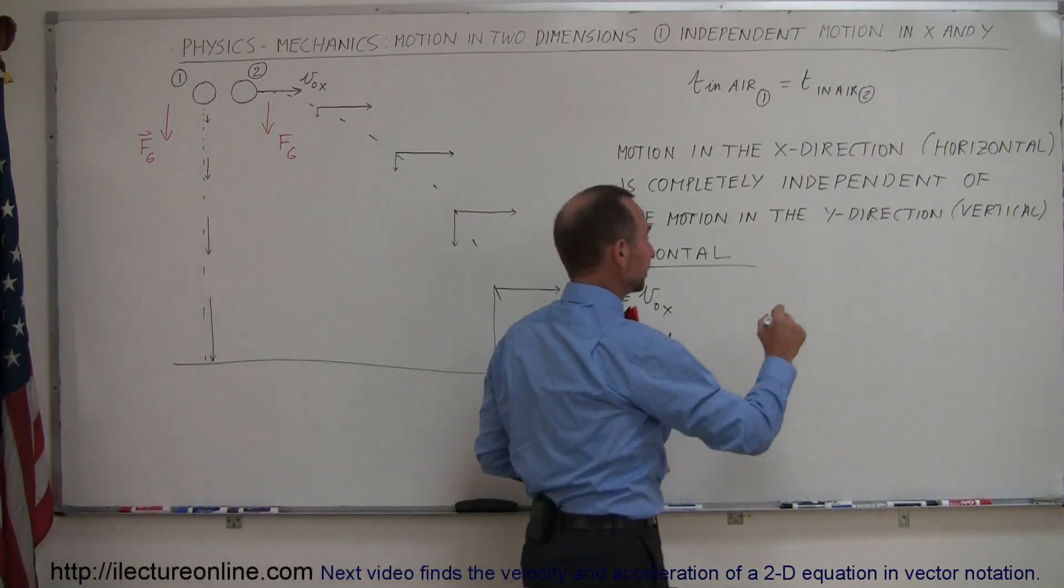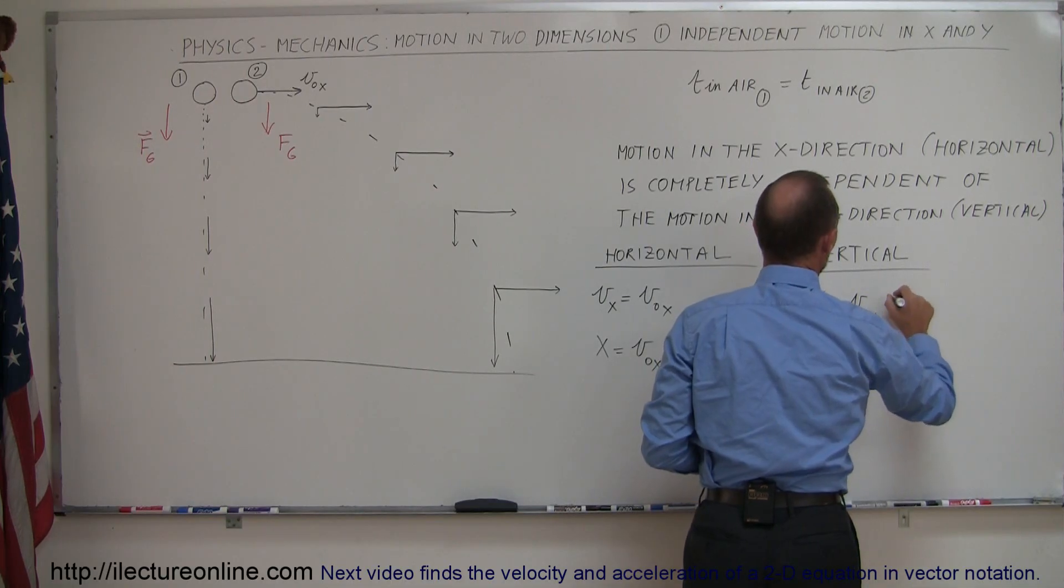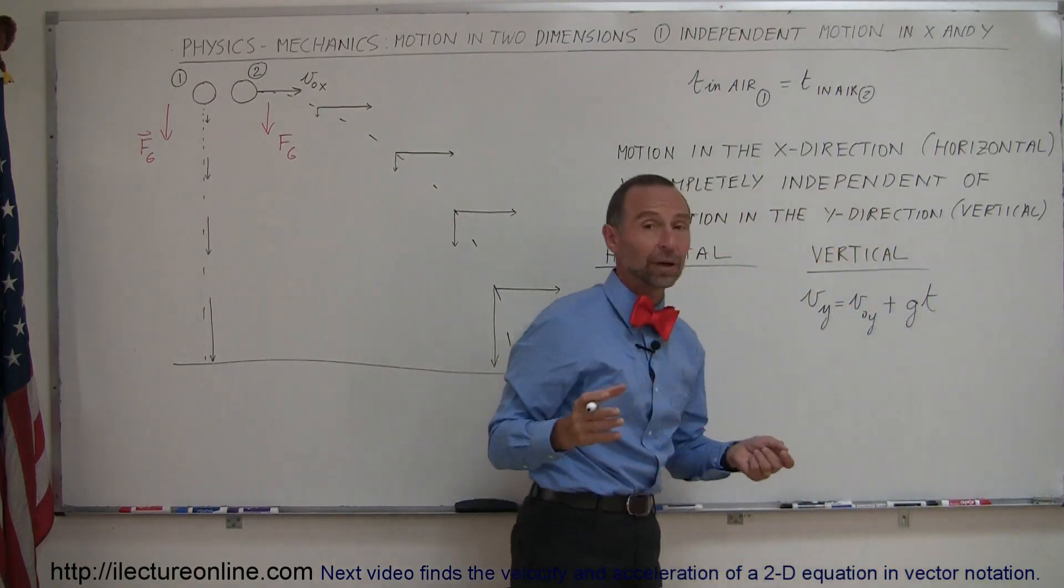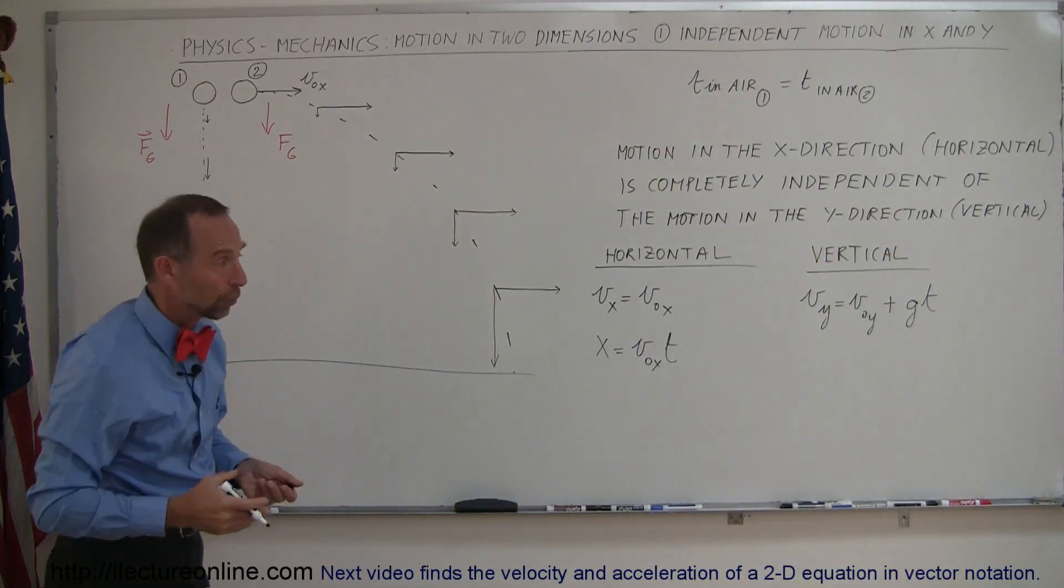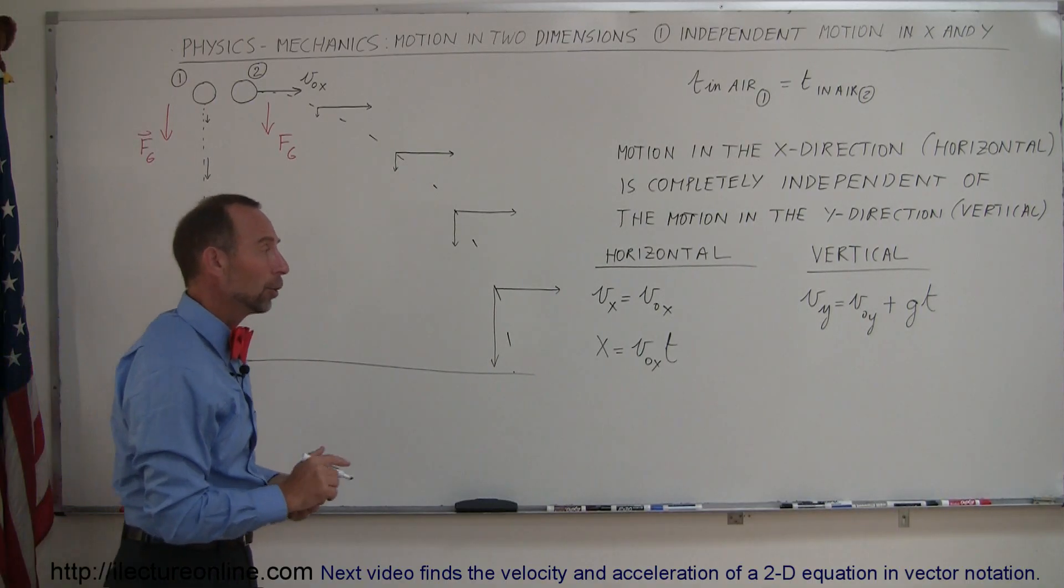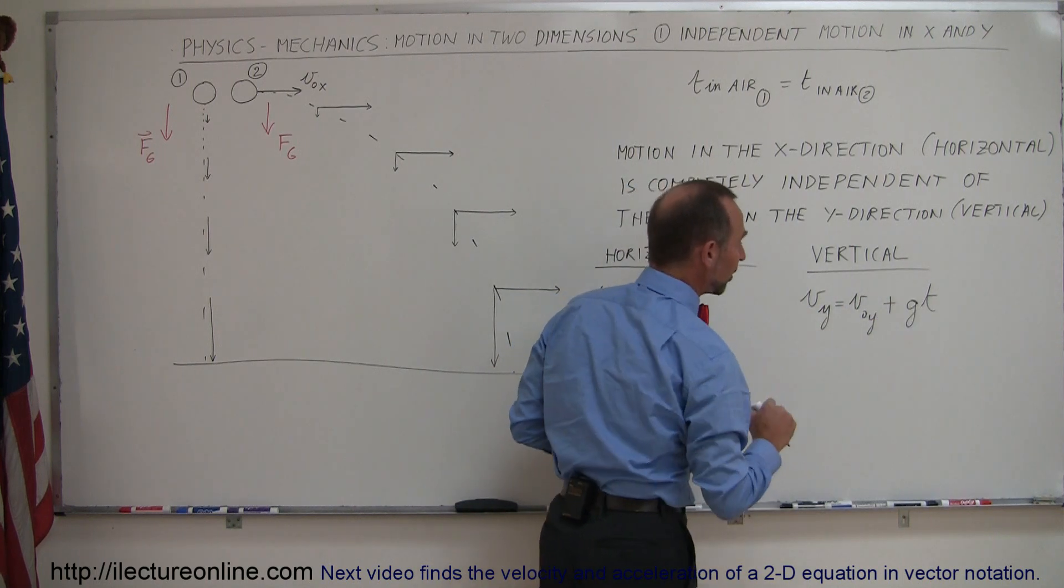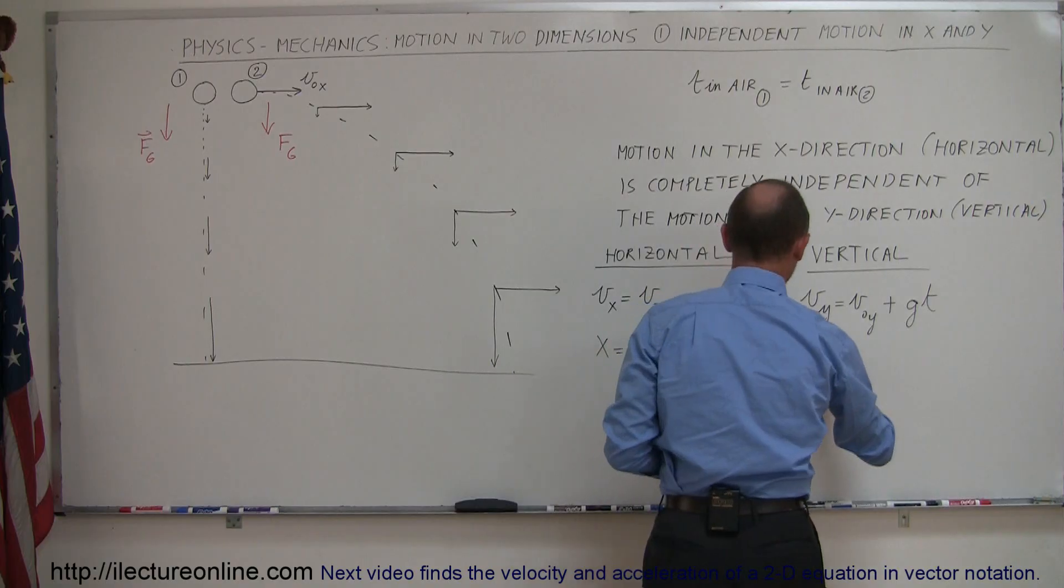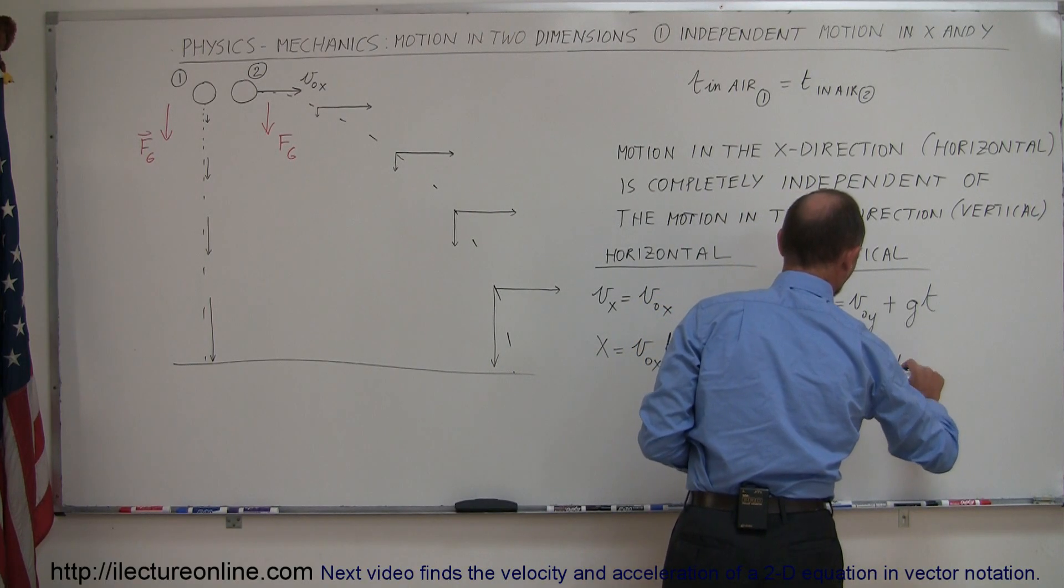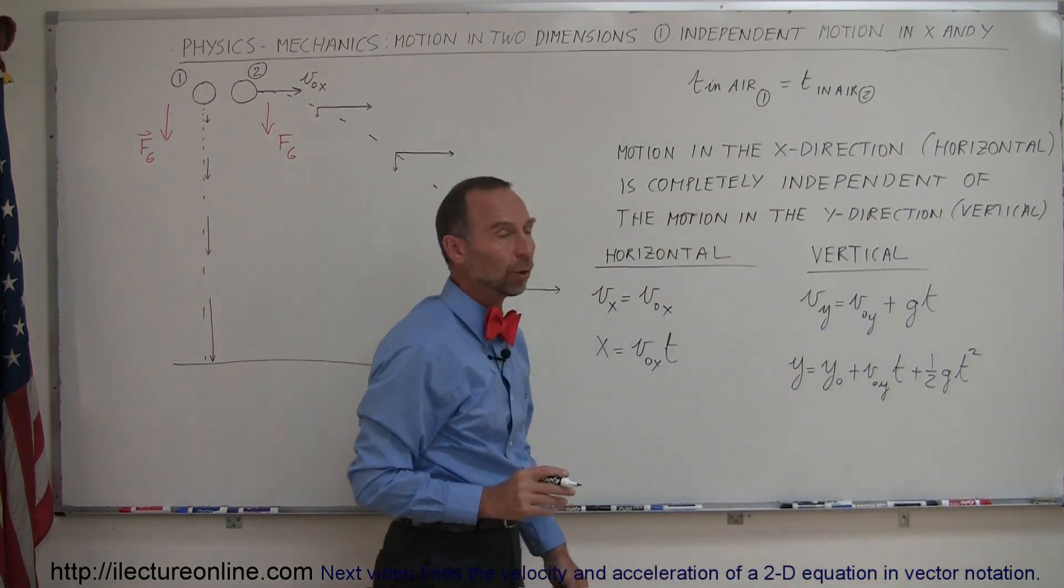On the vertical motion, the velocity in the y direction is equal to the initial velocity in the y direction, plus the acceleration times time. And in this case, we can probably just say that the acceleration for a projectile will be, of course, acceleration due to gravity, and that's a minus 9.8 meters per second squared. Notice that if it has no initial velocity in the y direction, then v sub y is simply equal to g times t. And for the position, we can say that y is equal to the initial position in the y direction, plus v initial in the y direction times time, plus one-half g t squared. And of course, that came from the equations of motion.